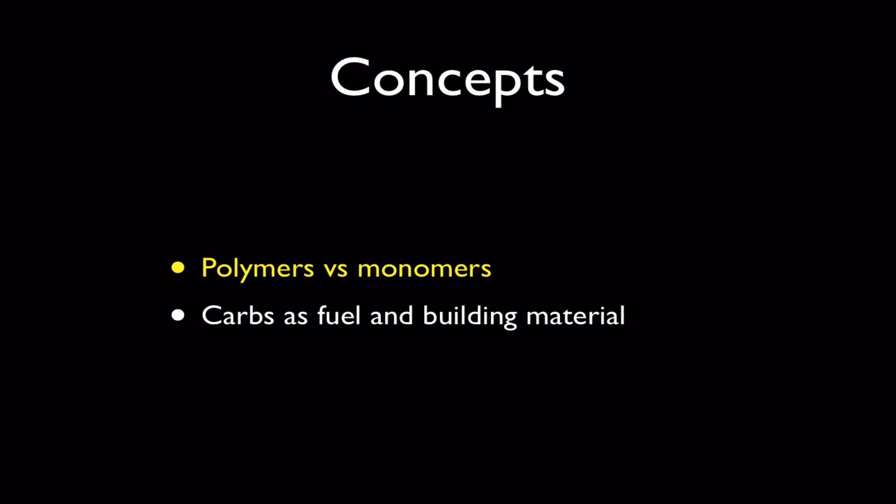We're going to focus on two concepts. First of all, it's really basic to all macromolecules: the idea that polymers are built from repeating monomers. And then we're going to focus on the two characteristics of carbohydrates that are most important — the fact that they're used as fuel for many cells and as building material, especially for insects and plants.